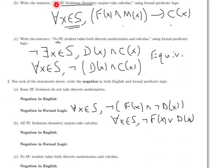That's all. So the opposite of all SU freshman chemistry majors do take calculus is some SU freshman chemistry majors don't take calculus. And so to say that using my formal logic, I say there is a student who is a freshman and a chemistry major and doesn't take calculus.